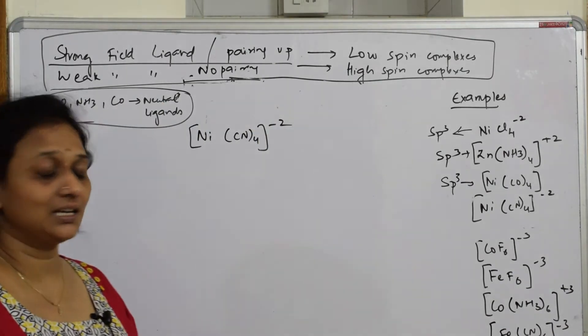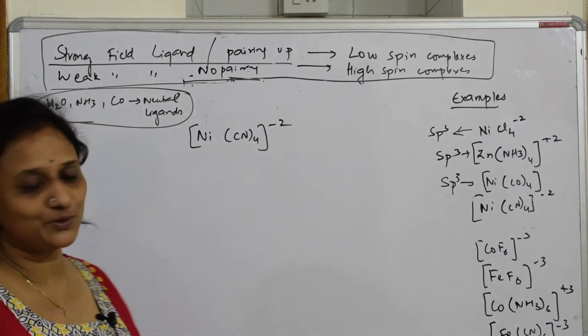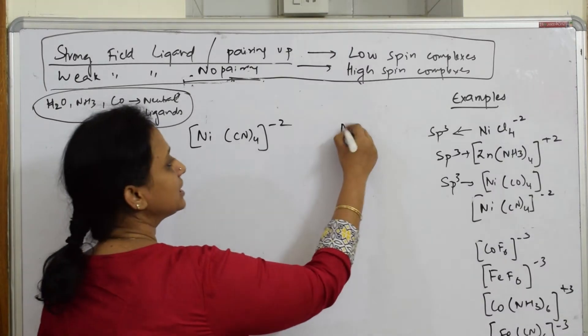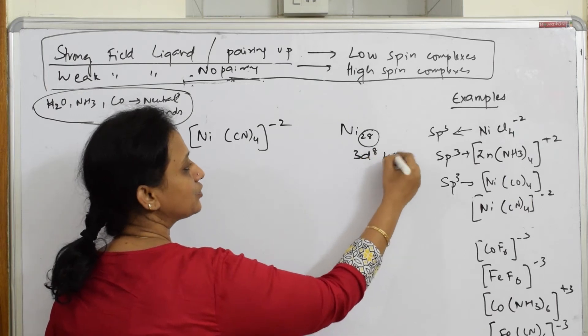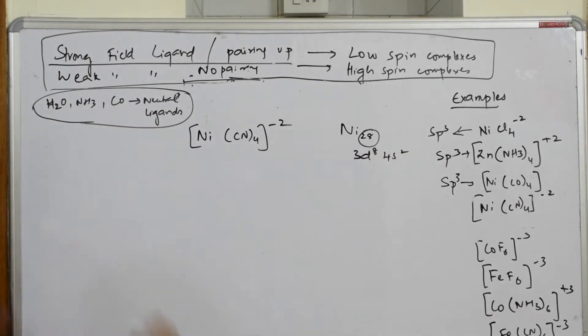Copy the complex carefully. This is important because students sometimes write minus 2 as plus 2 or they'll change the numbers. Please don't do that. Atomic number of nickel given to me is 28, so configuration is 3d8 4s2.